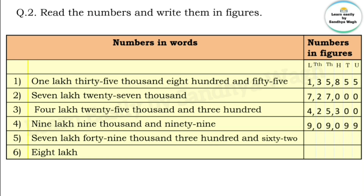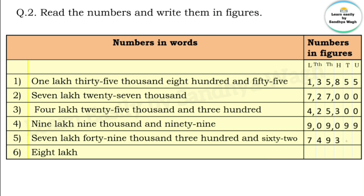Next number: seven lakh forty nine thousand three hundred and sixty two. Lakhs: seven, write 7. Thousands: forty nine — four ten-thousands and nine thousands, write 4 and 9. Hundreds: three, write 3. Sixty two — six tens and two units, write 6 in tens place and 2 in units place. The number is 7,49,362.